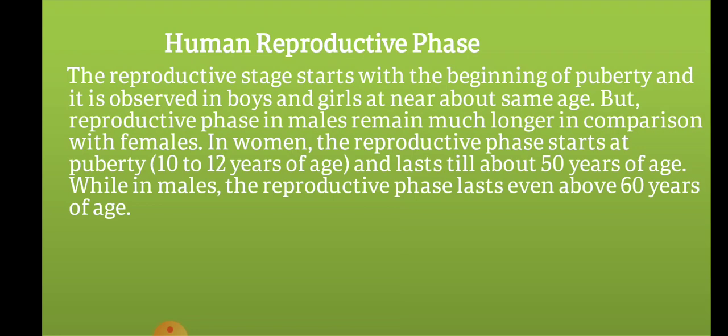The second topic is human reproductive phase. The reproductive stage in humans begins with puberty and is observed in boys and girls at nearly the same age, but the reproductive phase in males remains much longer than in females. In females, the reproductive phase starts at puberty, around 10 to 11 years of age, and lasts until about 50 years of age, while in males it lasts even above 60 years of age.